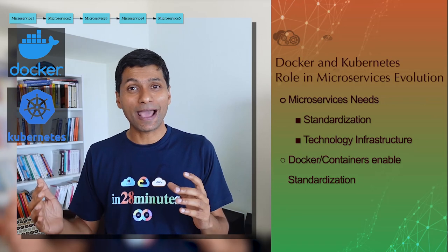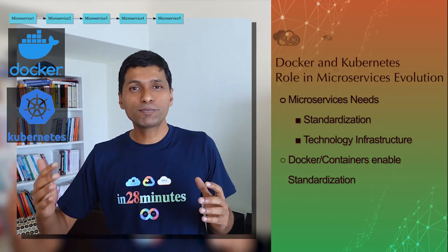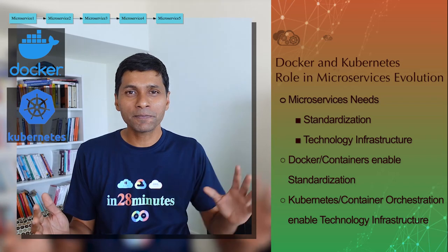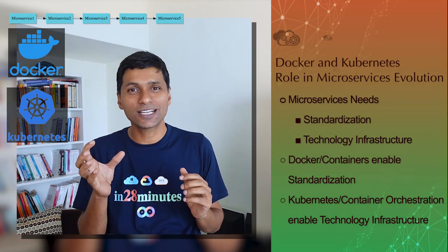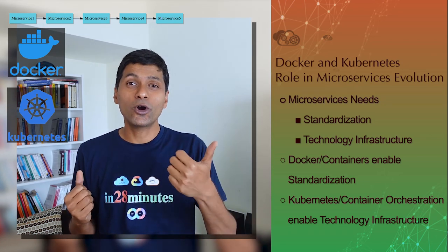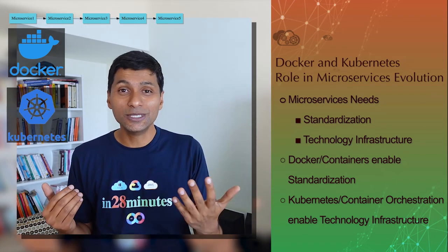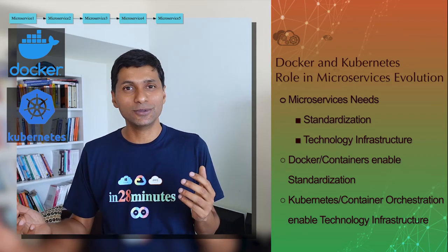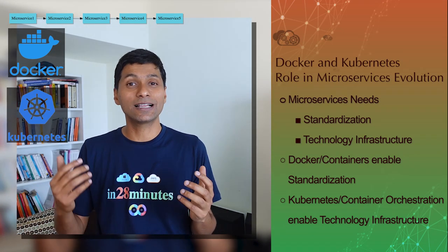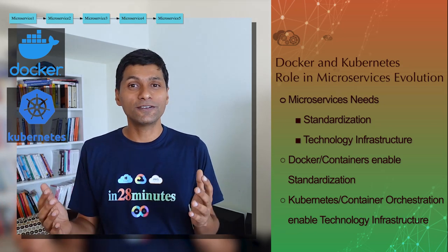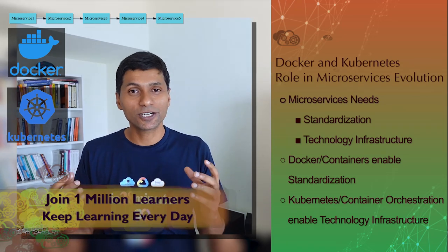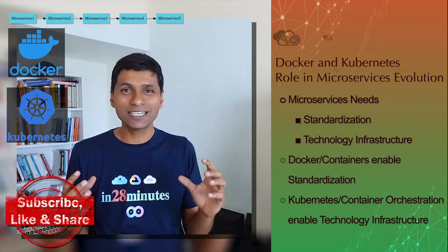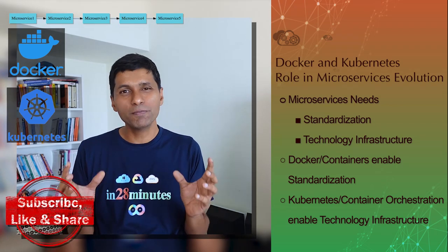Another thing that developed in parallel was container orchestration. The most popular tool, as we all know, is Kubernetes. Kubernetes has become popular because it provides the technology infrastructure needed to run microservices. If you want a naming server or service registry, that's built into Kubernetes. If you want an API gateway, you can implement a service mesh. Tracing, centralized logging, and many other features can also be implemented using the service mesh in Kubernetes.